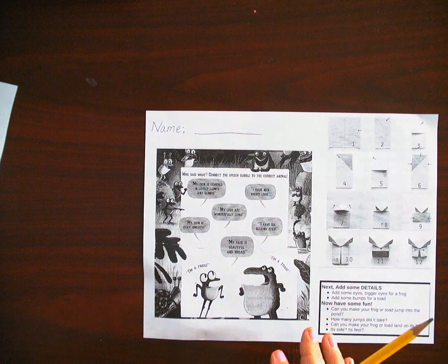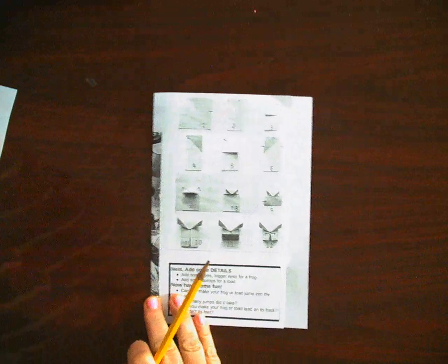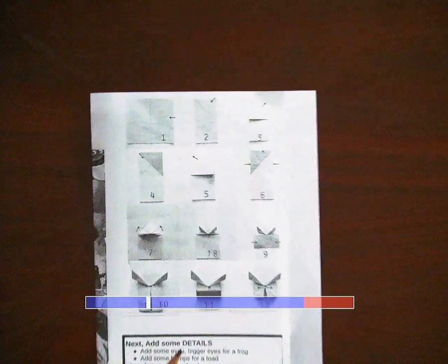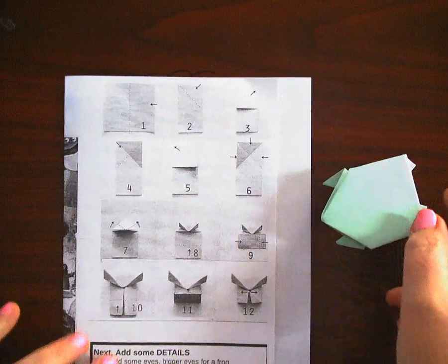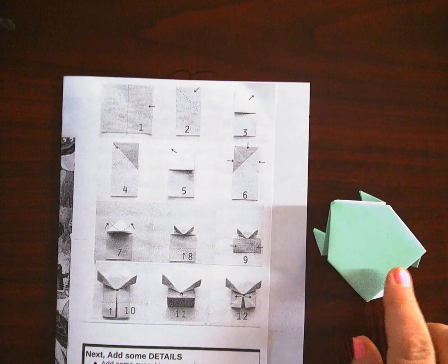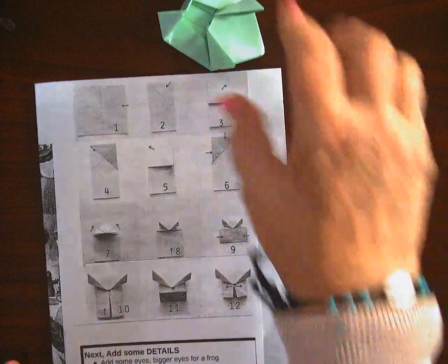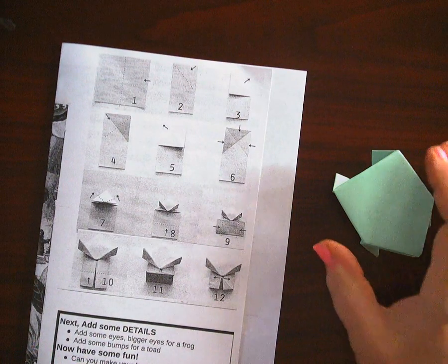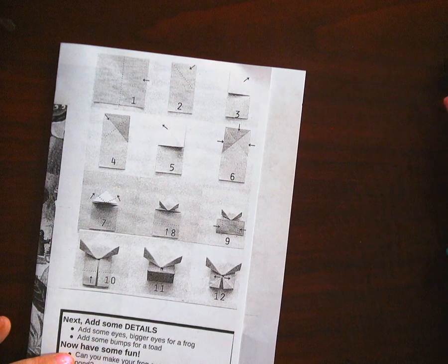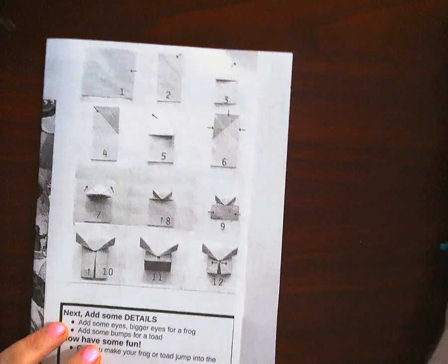Okay, now here comes the really fun thing if you want to take on a challenge. On this side of the page, this has directions on how to fold one of these. This is a jumping frog or toad, depending on how you decorate it. Are you going to make big eyes or little eyes?